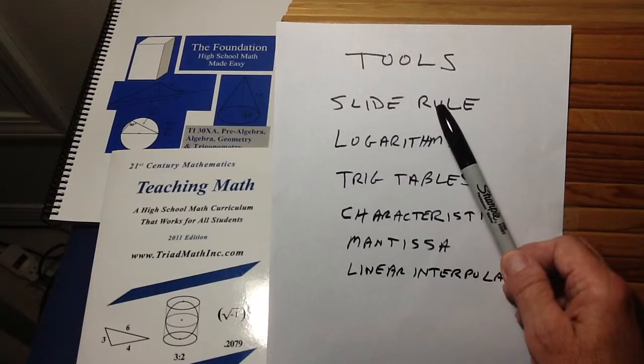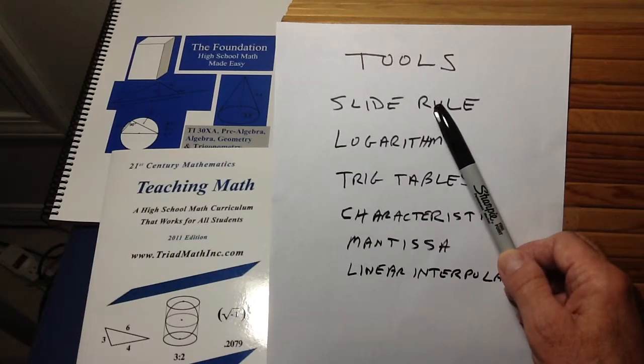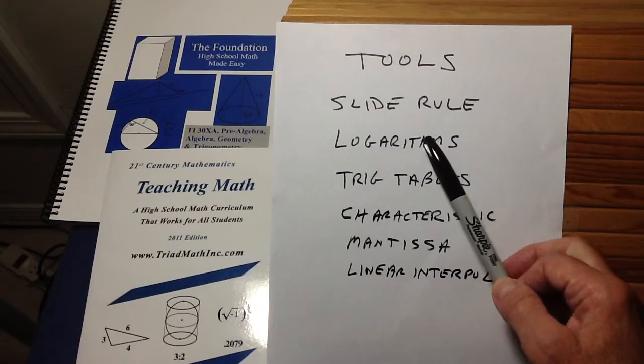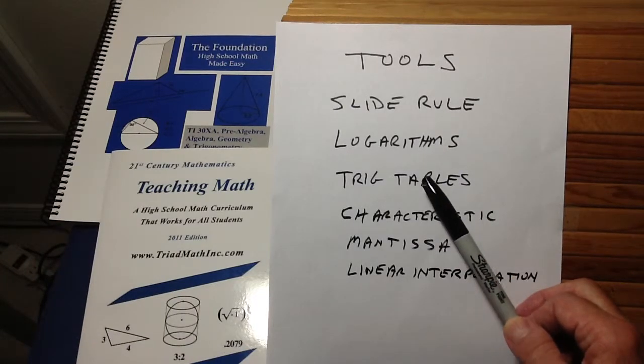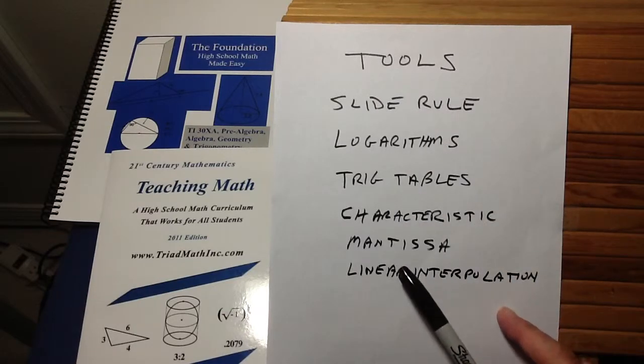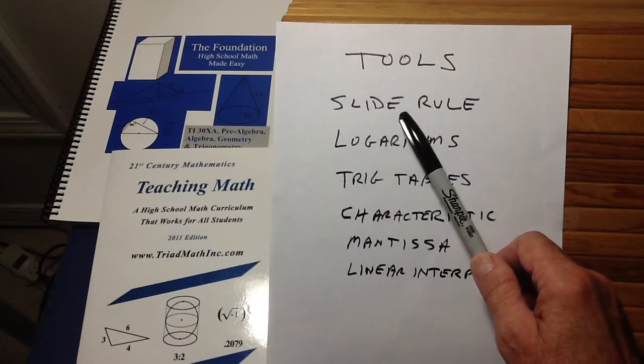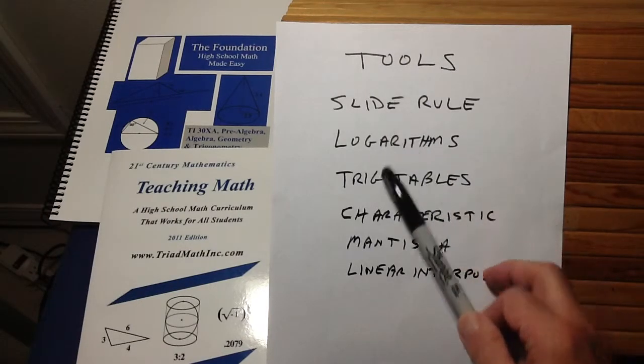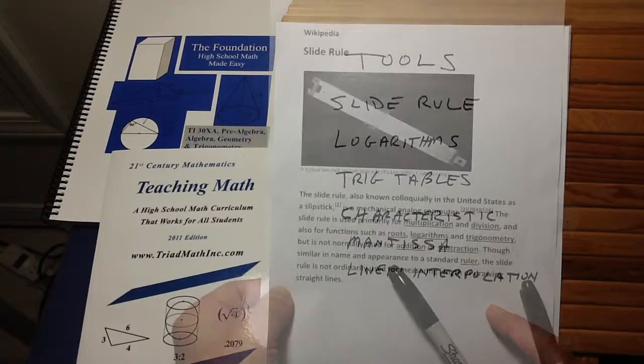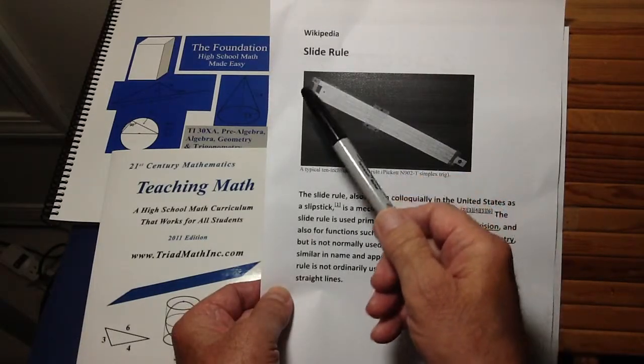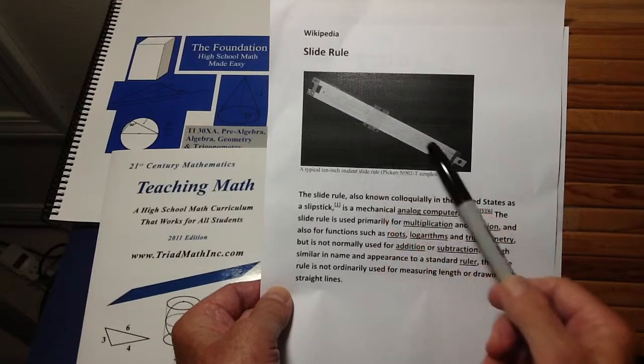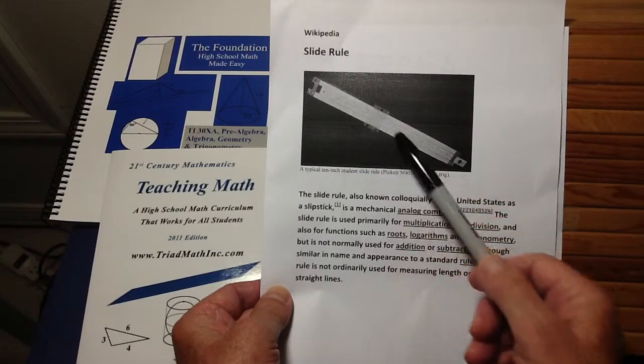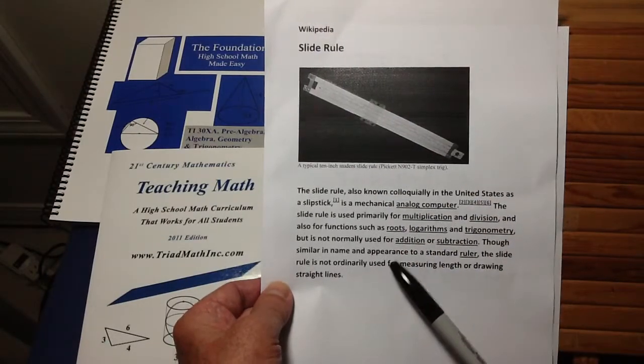And this is what the math education community did. The books were written to do it. There weren't really videos back then, but the books and the classes and all of the math teachers were trained to teach these things. And they weren't easy. It took a student quite a long while to learn all the subtleties of these things and how to use these tools. But that was the state of affairs in 1972. You can go to Wikipedia, for example, and look up slide rule and learn all about it.